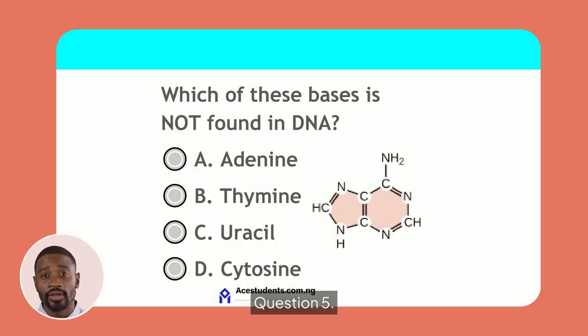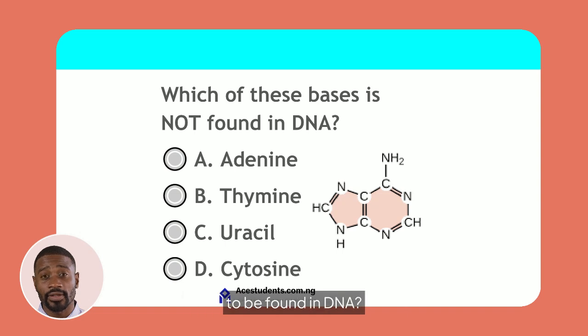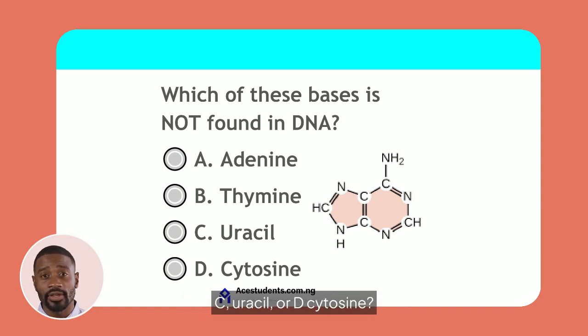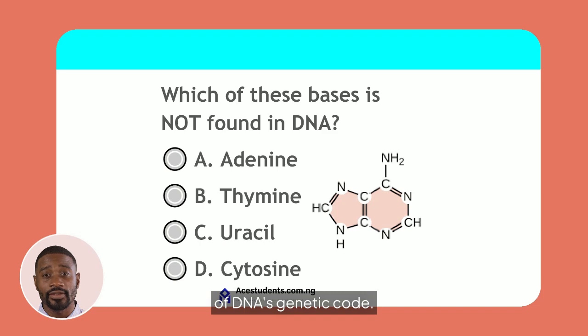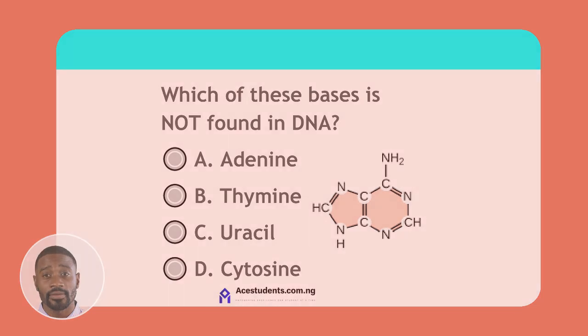Question 5. Which of these bases is found in DNA? Is it A. Adenine, B. Thamen, C. Uracil, or D. Cytosine? Consider the components of DNA's genetic code.